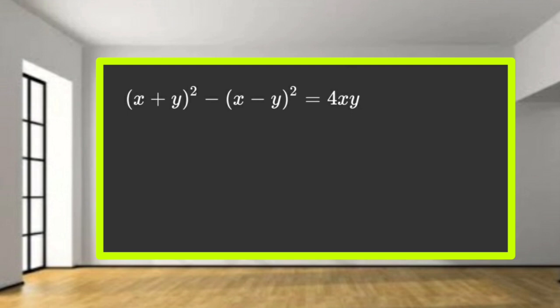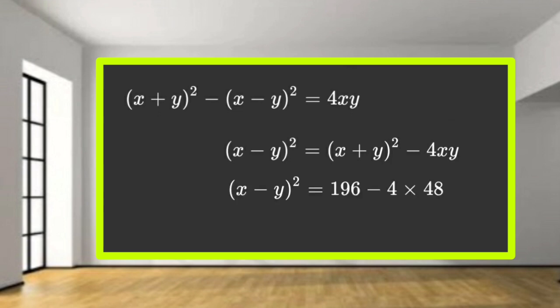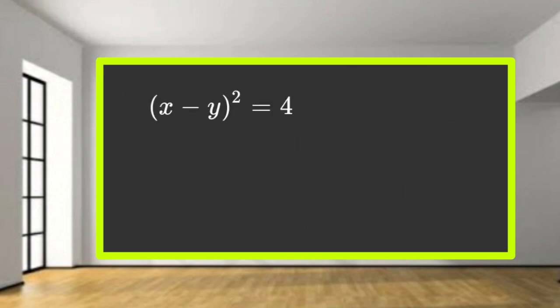Using the identity: x plus y all square minus x minus y all square equals 4xy. So x minus y all square equals x plus y all square minus 4xy, which is 196 minus 192 equals 4. Therefore x minus y is equal to 2.